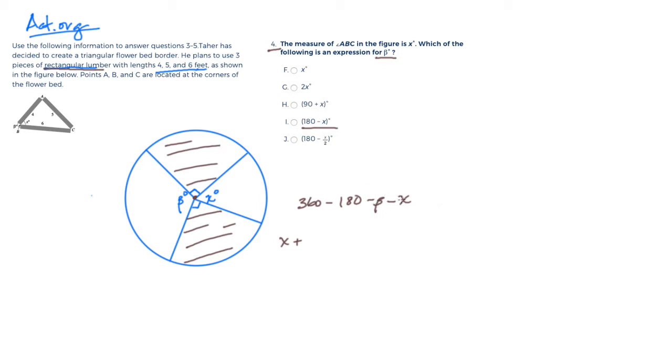They want to know what the expression is for beta, and so I can just move this over here. So if I add beta to both sides, then I can say that 360 minus 180 is 180 minus X is equal to beta, and that's this answer here.